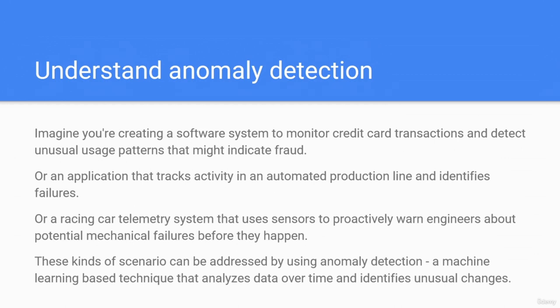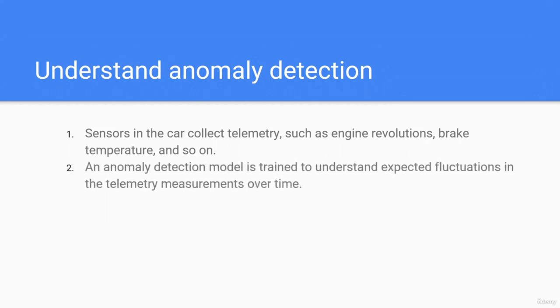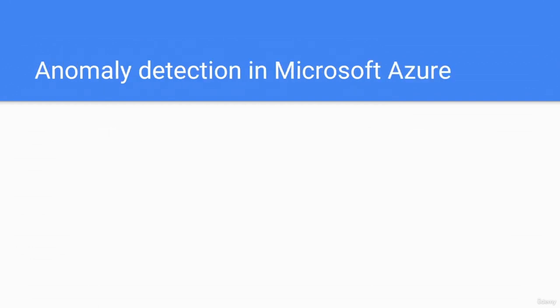Anomaly detection is a machine learning-based technique that analyzes data over time and identifies any unusual changes. First, sensors in the car collect telemetry such as engine revolutions and brake temperatures. An anomaly detection model is trained to understand unexpected fluctuations in the telemetry measurements over time. If a measurement occurs outside of the normal expected range, the model reports an anomaly that can alert the race engineer to call the driver in for a pit stop to fix the issue before it forces retirement from the race.